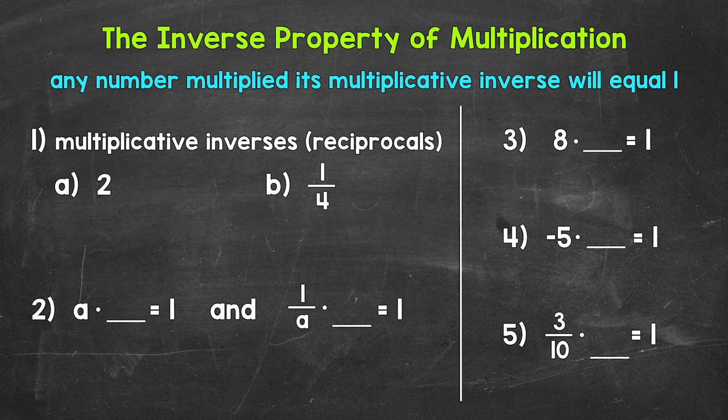Simply put, when we think of the inverse property of multiplication, we need to think: what can we multiply something by to get 1? Any number multiplied by its multiplicative inverse will equal 1. A multiplicative inverse is also known as a reciprocal.